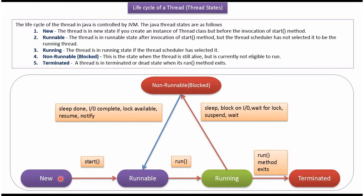To summarize the transitions: from the new state a thread can go to runnable; from runnable to running; from running to terminated; from running to non-runnable; and from non-runnable back to runnable. This is about the life cycle of a thread. Thanks for watching.